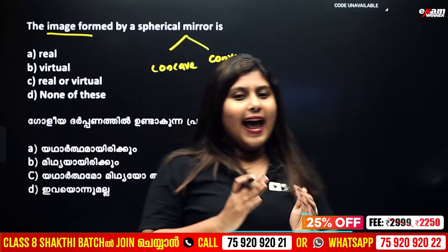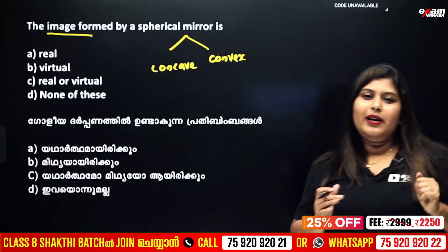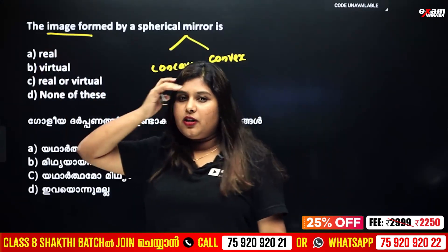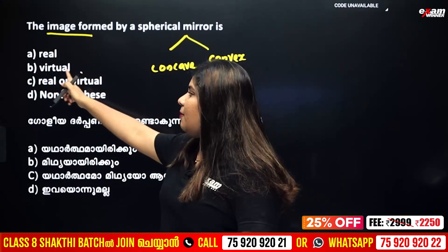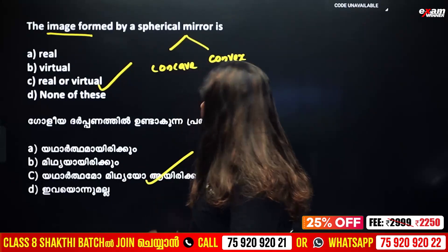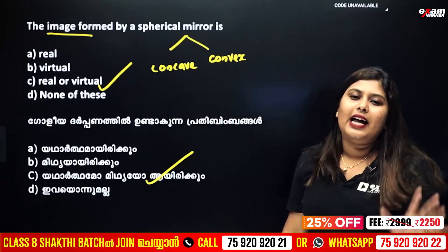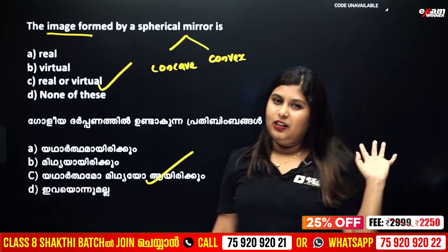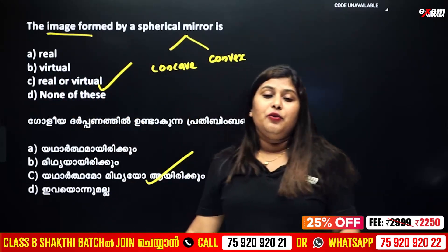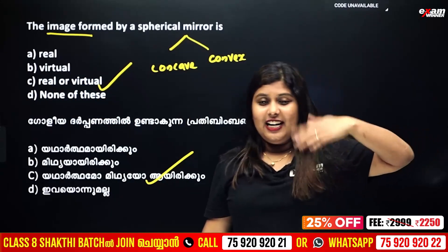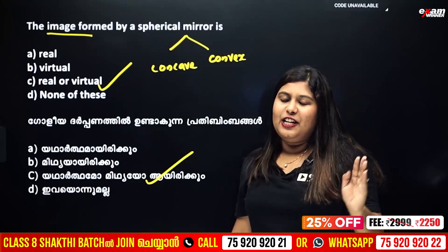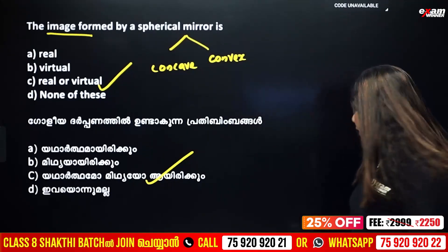So, what is the real image? In a concave mirror there can be a real image or a virtual image. A convex mirror always gives a virtual image. Real image is inverted, and virtual image is erect.